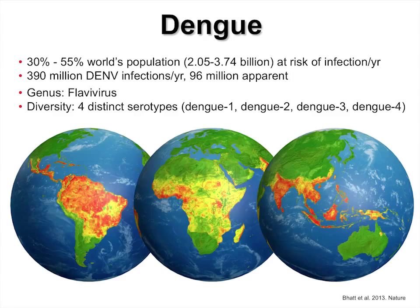This is a map of the globe. The red areas are places where we expect high transmission of dengue; yellow is moderate, and green is where we don't think it occurs at all. We estimate about a third to over half the world's population is at risk. Each year there are about 390 million infections, and about 96 million of those people get sick — sick enough to stay home from school or work. So about three-quarters of the people get infected but not debilitatingly so.